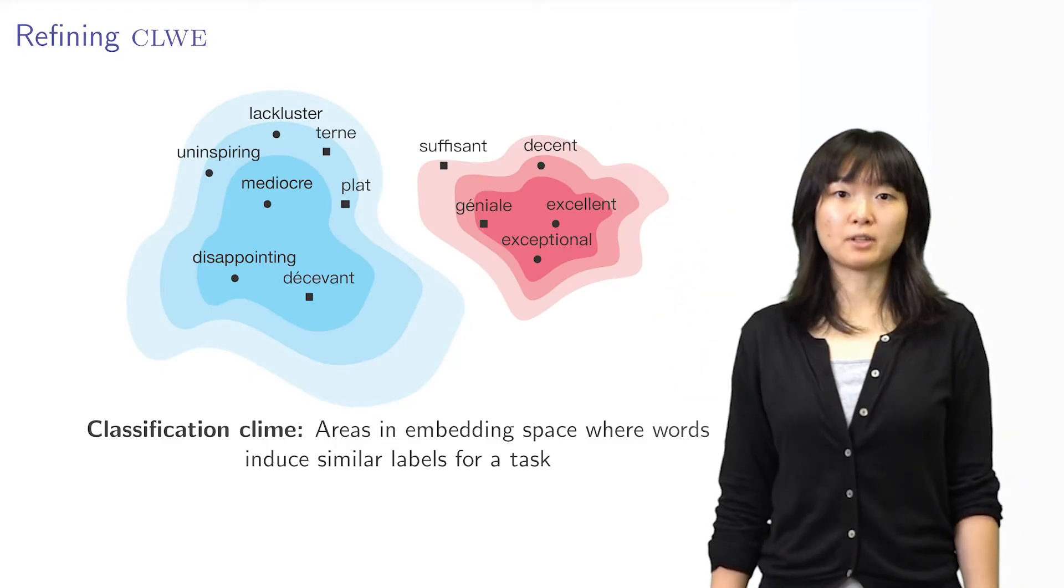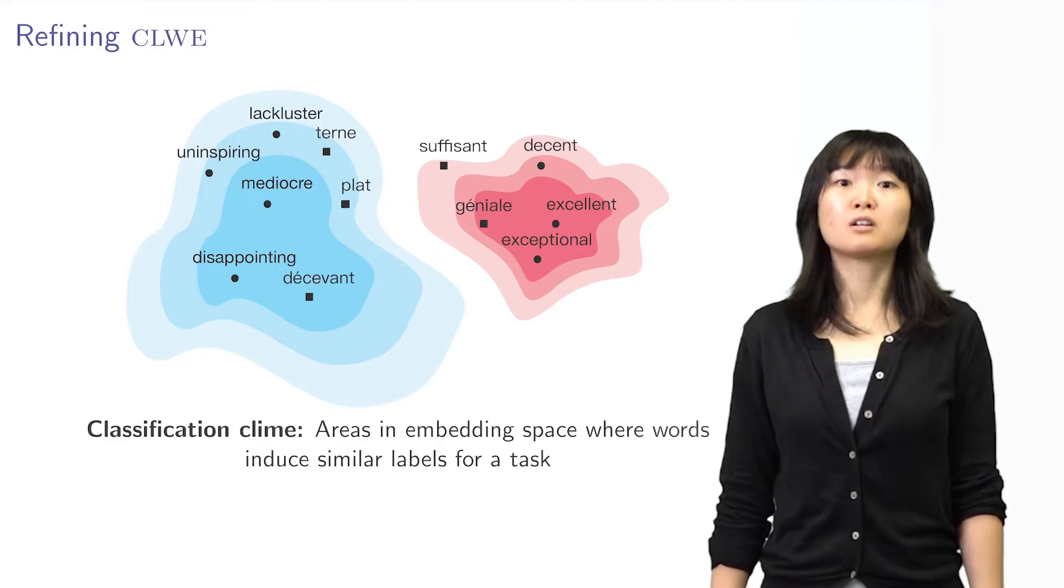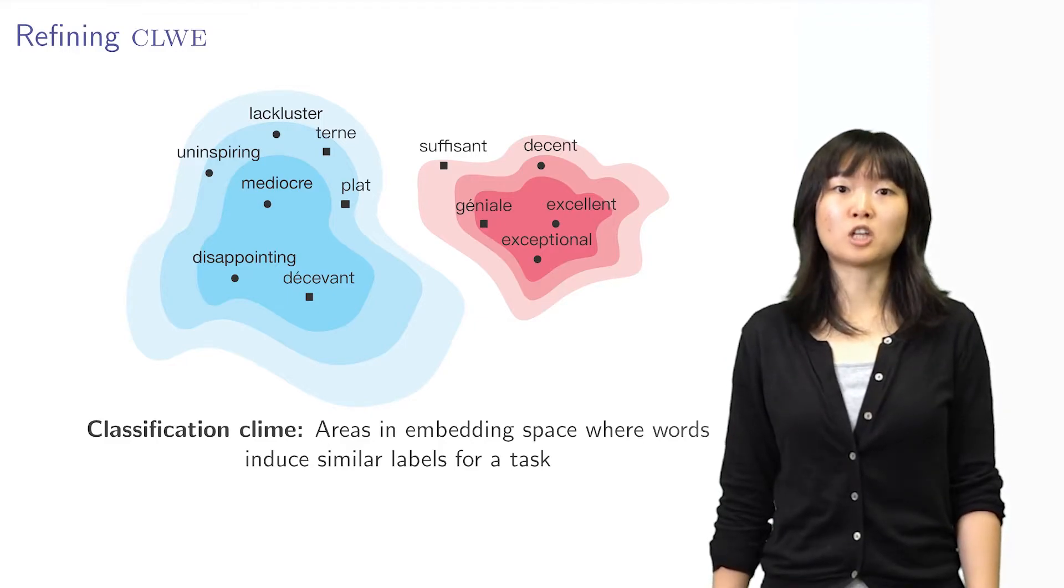In our paper, we want to reshape the embedding space and create what we call classification climes, which are areas in the embedding space that induce similar labels for a task.